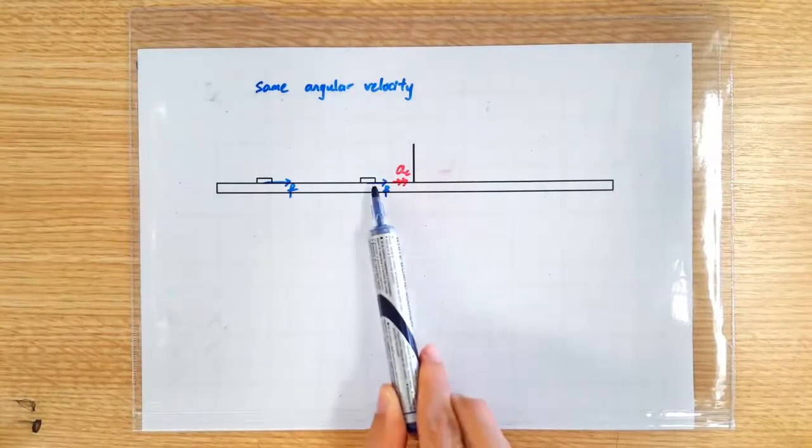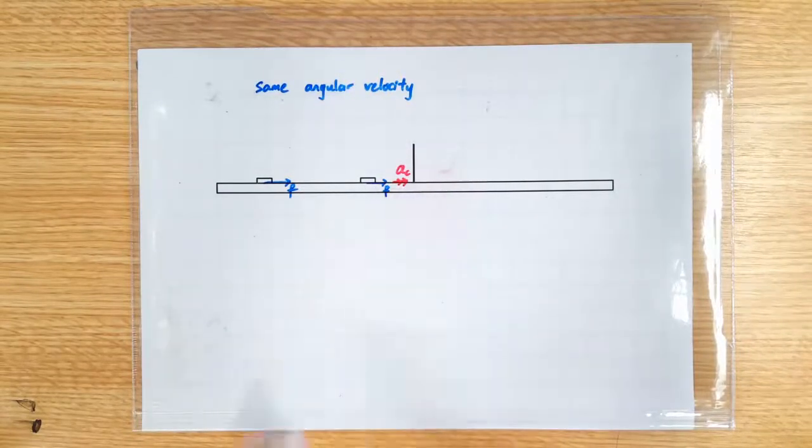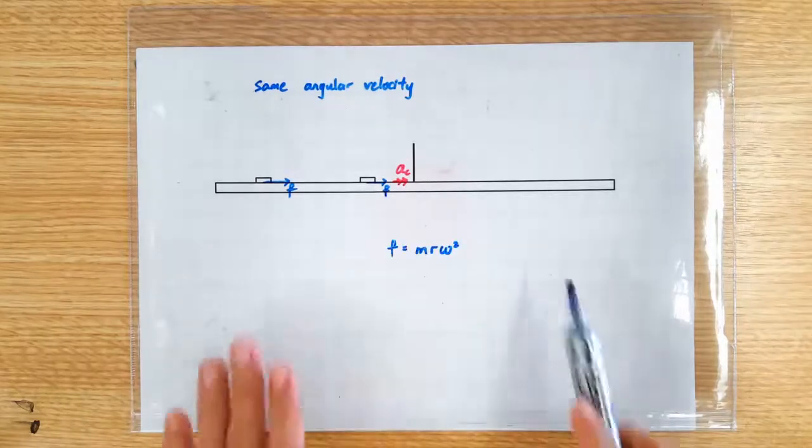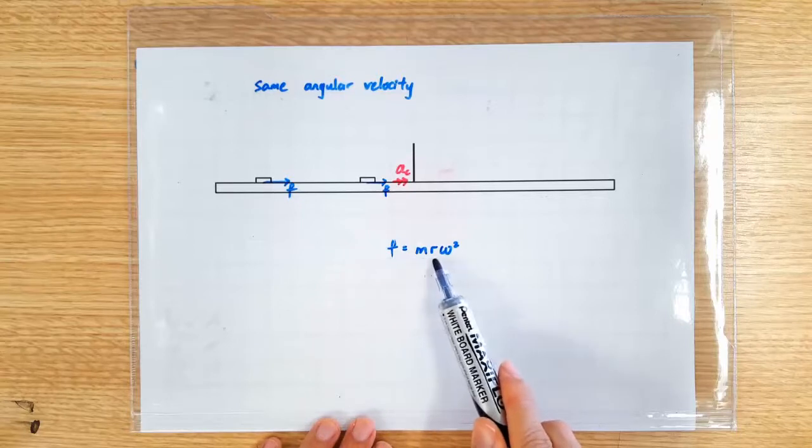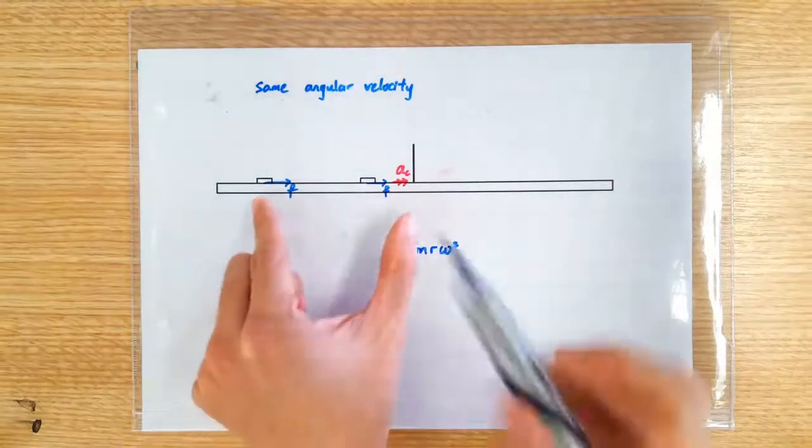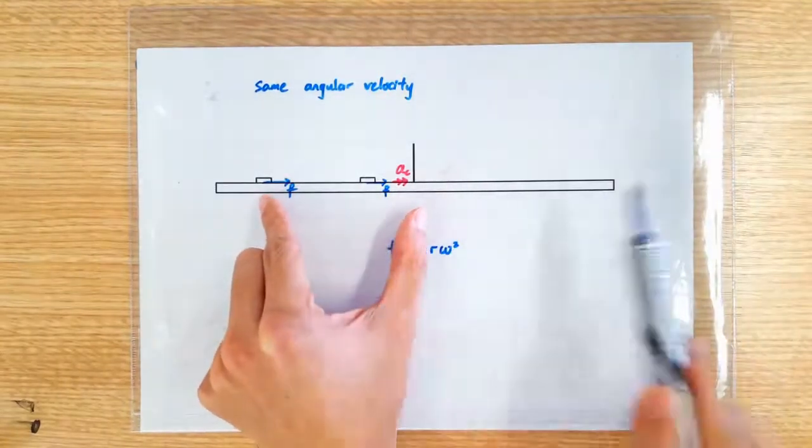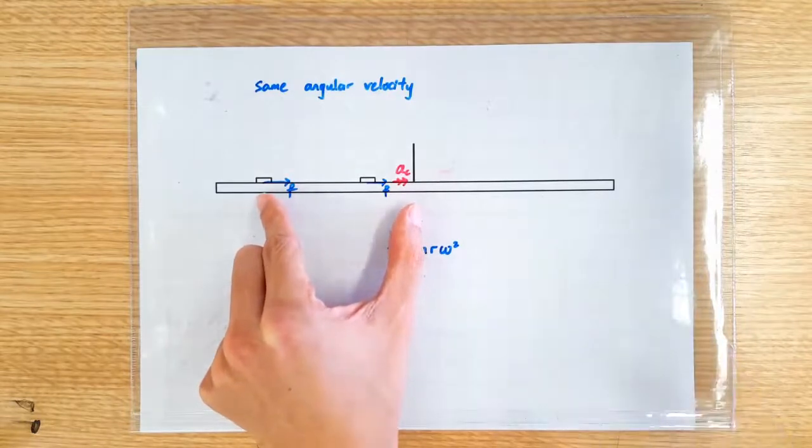So again, it's the frictional force that provides the required centripetal force. But this time, we are going to write frictional force equals mr omega squared. This object is doing circular motion with a much larger radius.